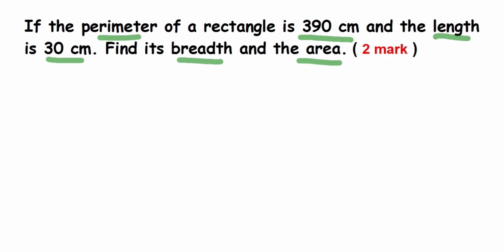So let's write down what we know from the question. Here is the solution. What is given? We have given two things: one is perimeter, so perimeter is equal to 390 centimeter, and they also given length, so L is equal to 30 centimeter.